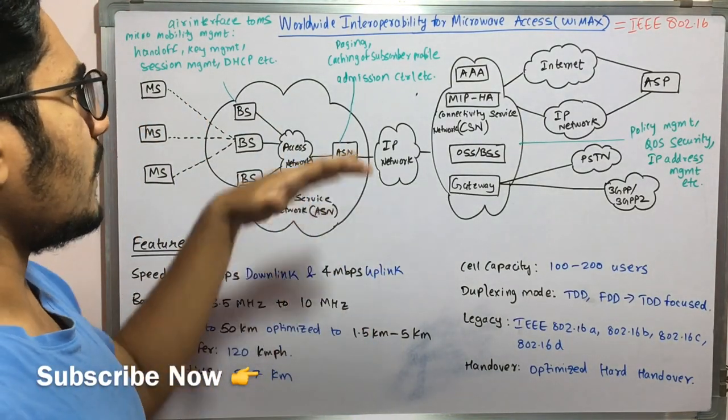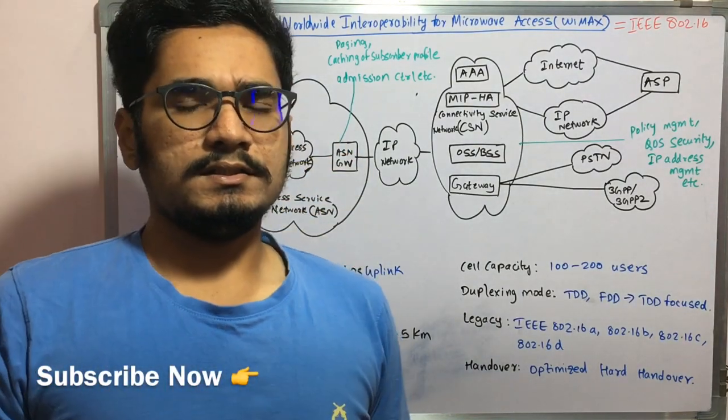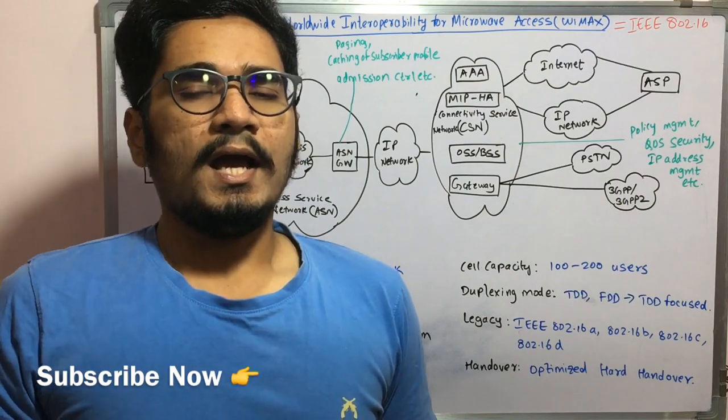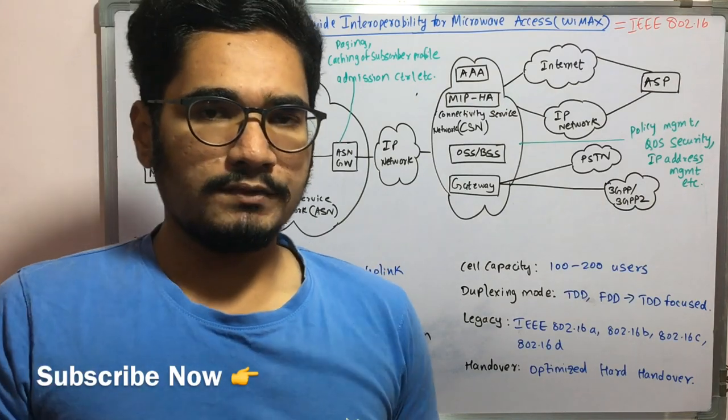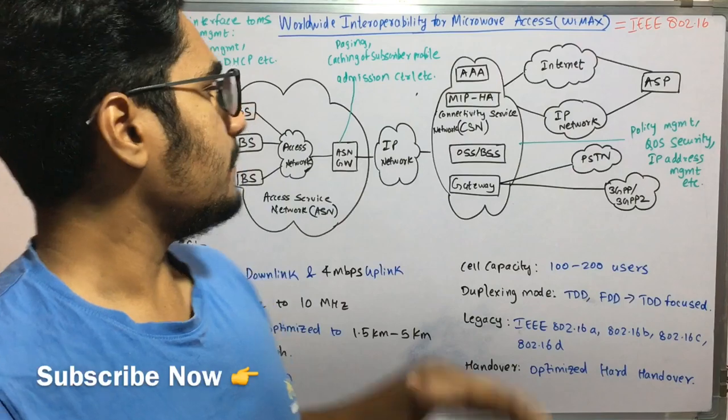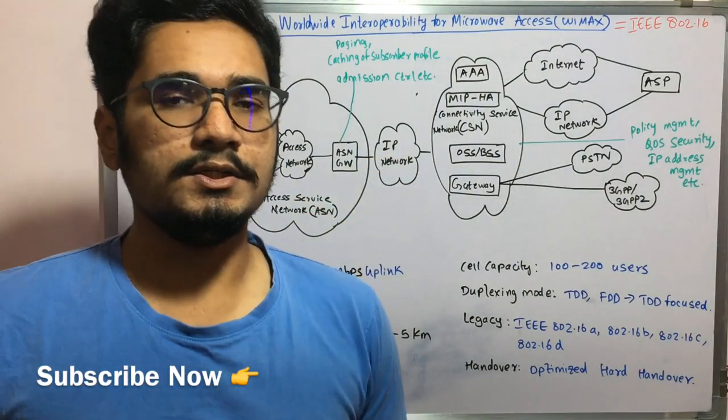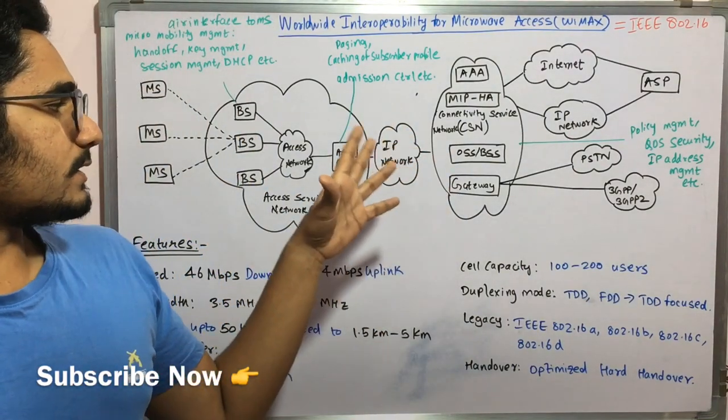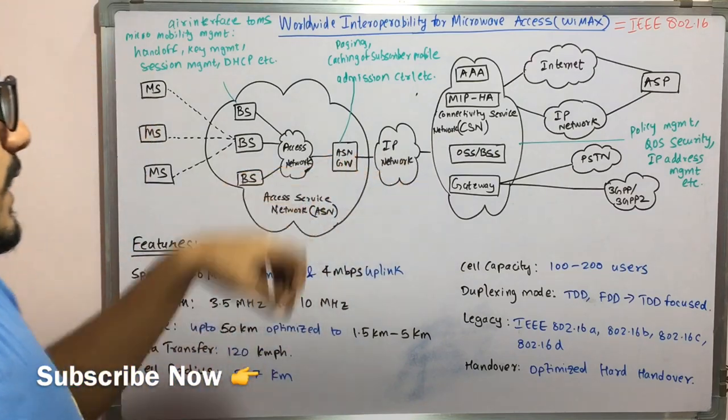Next, you have the admission control. So admission control is nothing but the rule whether the proper IP packets or whether the proper request should be sent or not, because it mainly concerns with all the legal issues and major security is just kept over this ASN GW.